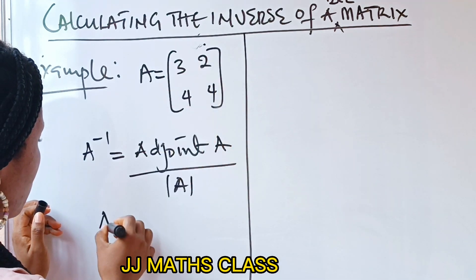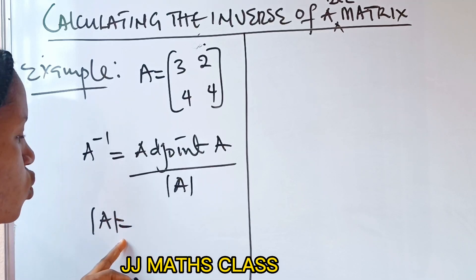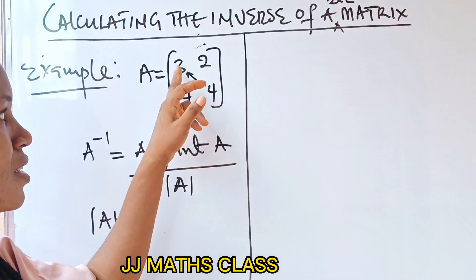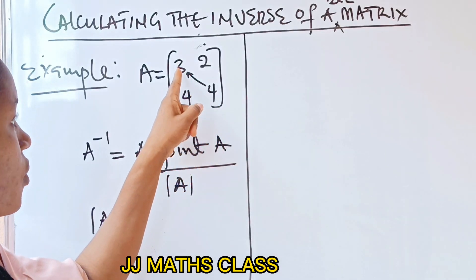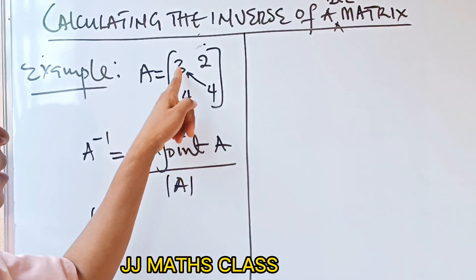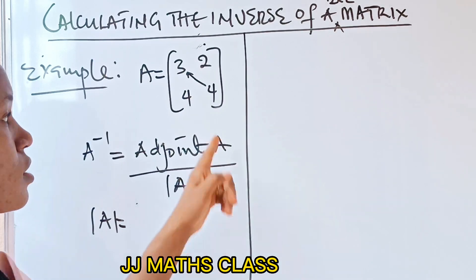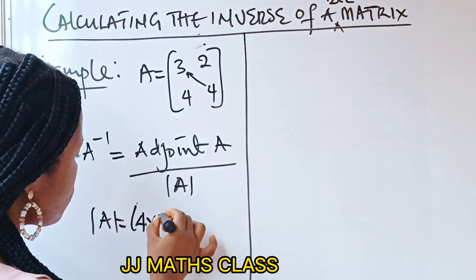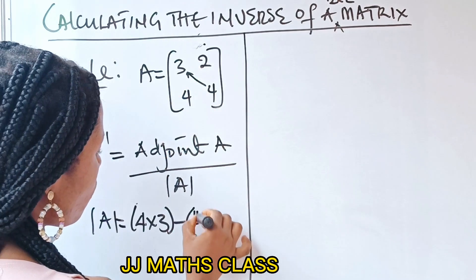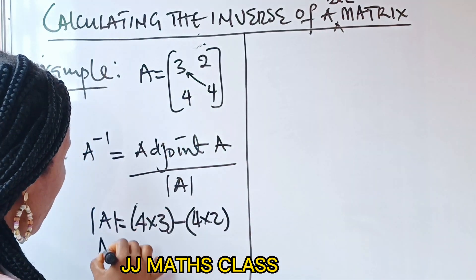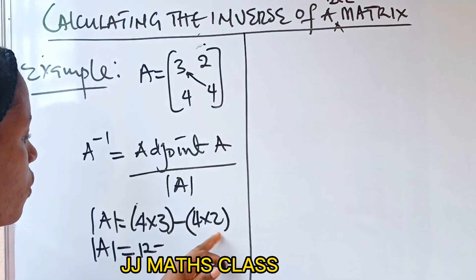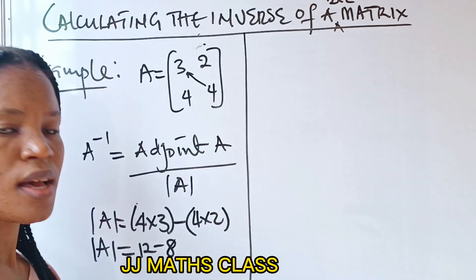This is a 2 by 2 matrix. The determinant of this 2 by 2 matrix: this 3 and 4 is the leading diagonal. So what do you do? 4 times 3 — you are going to multiply them first. 4 times 3 gives you 12, minus the other elements, 4 times 2. Your determinant is equal to 4 times 3, which is 12, minus 4 times 2, which is 8.